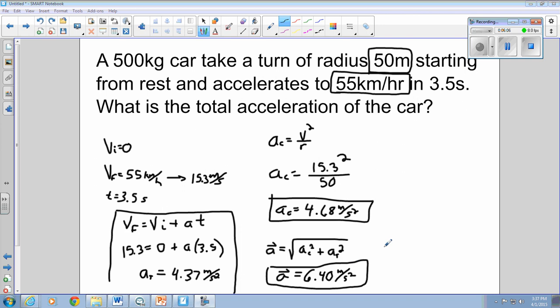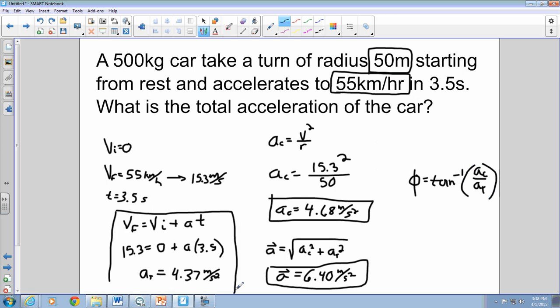Solving, we get total linear acceleration equal to 6.4 meters per second squared. And then we are going to need to find the angle by taking the inverse tangent of our centripetal acceleration over our tangential acceleration. And it makes an angle of 47 degrees from the tangent line. So this is your total linear acceleration of the car.